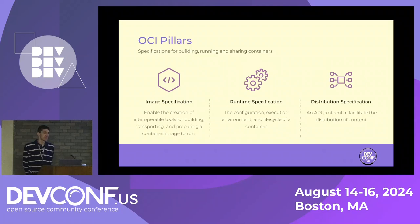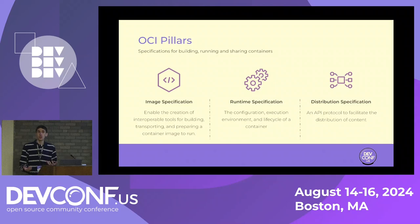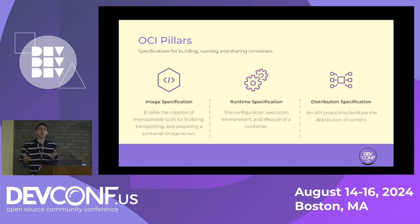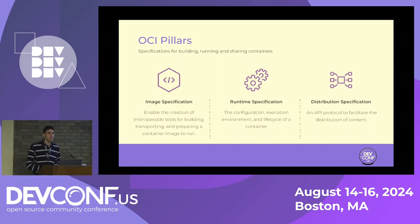There are three primary pillars of the OCI. First, the image specification — everything that makes up the composition of an image. Second, the runtime specification — what it takes to run a container image. Third, the distribution specification — how to store and distribute container images broadly. Any container registry, whether Quay, Docker Hub, or Azure Container Registry, is bound by this distribution specification.